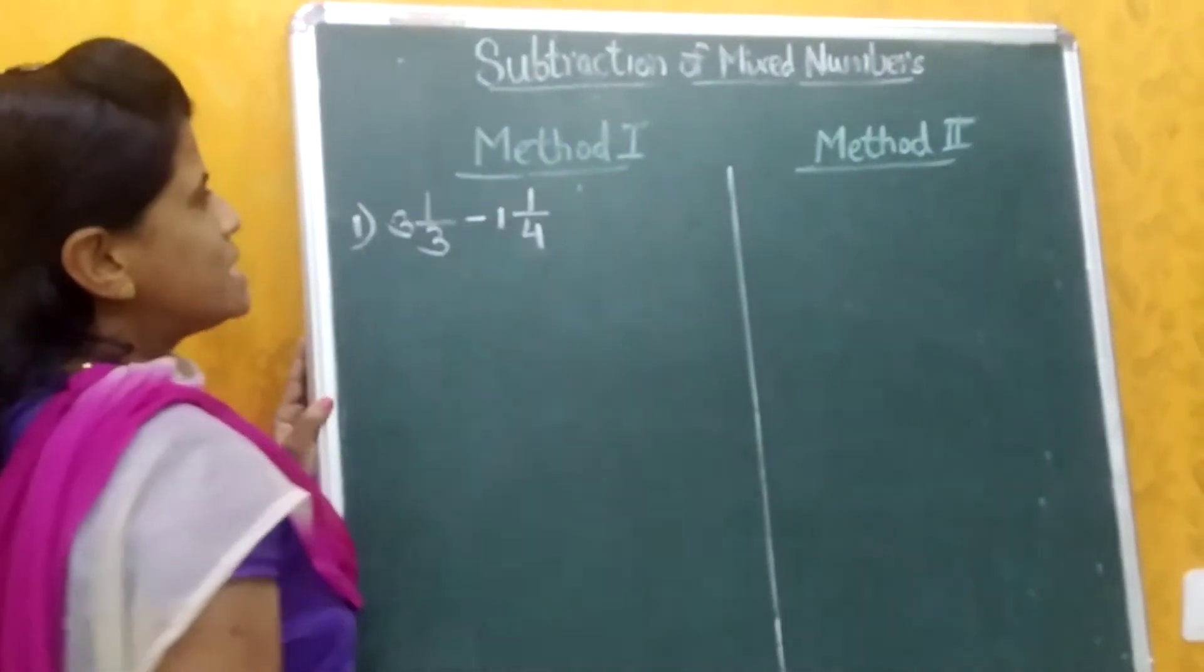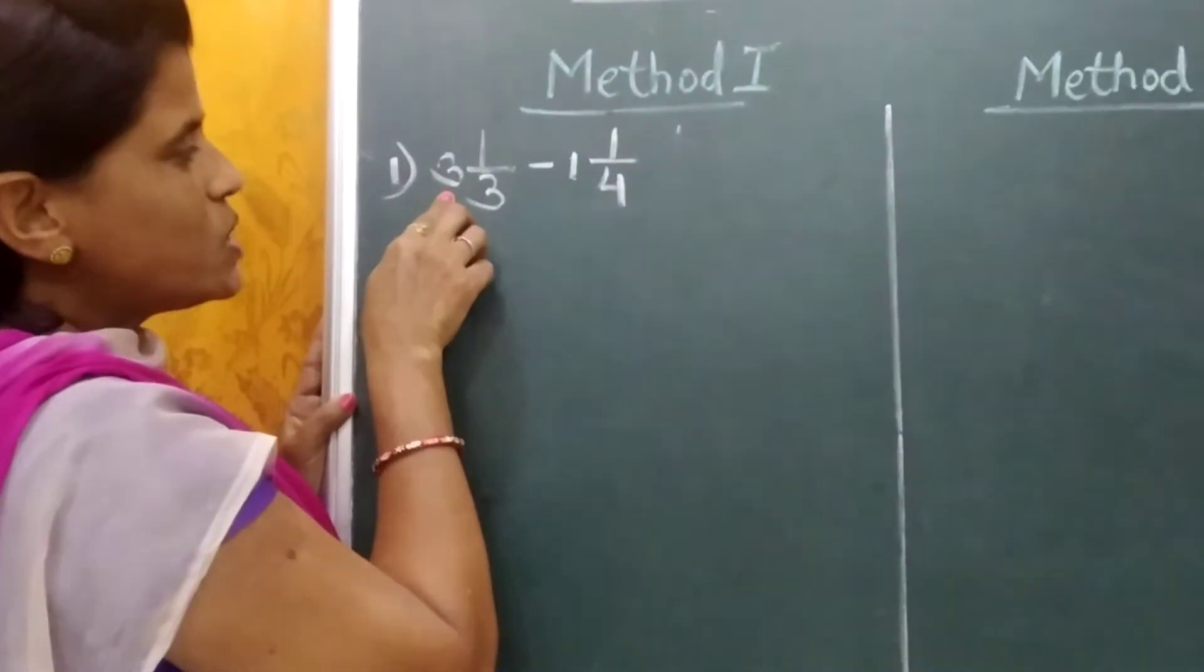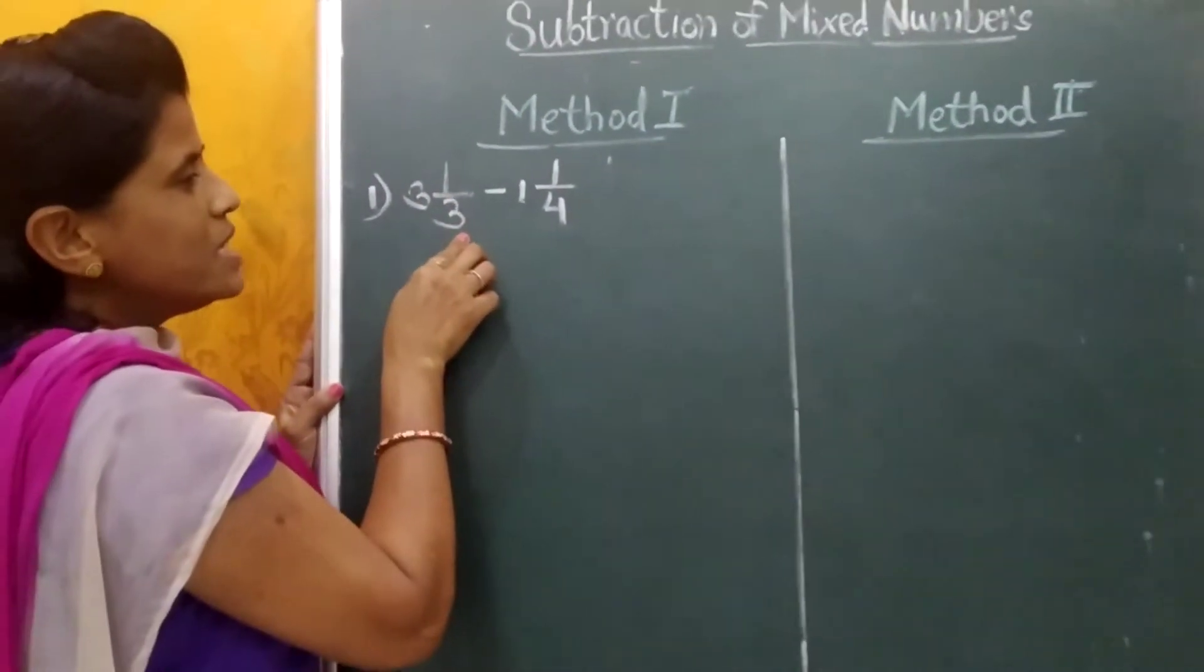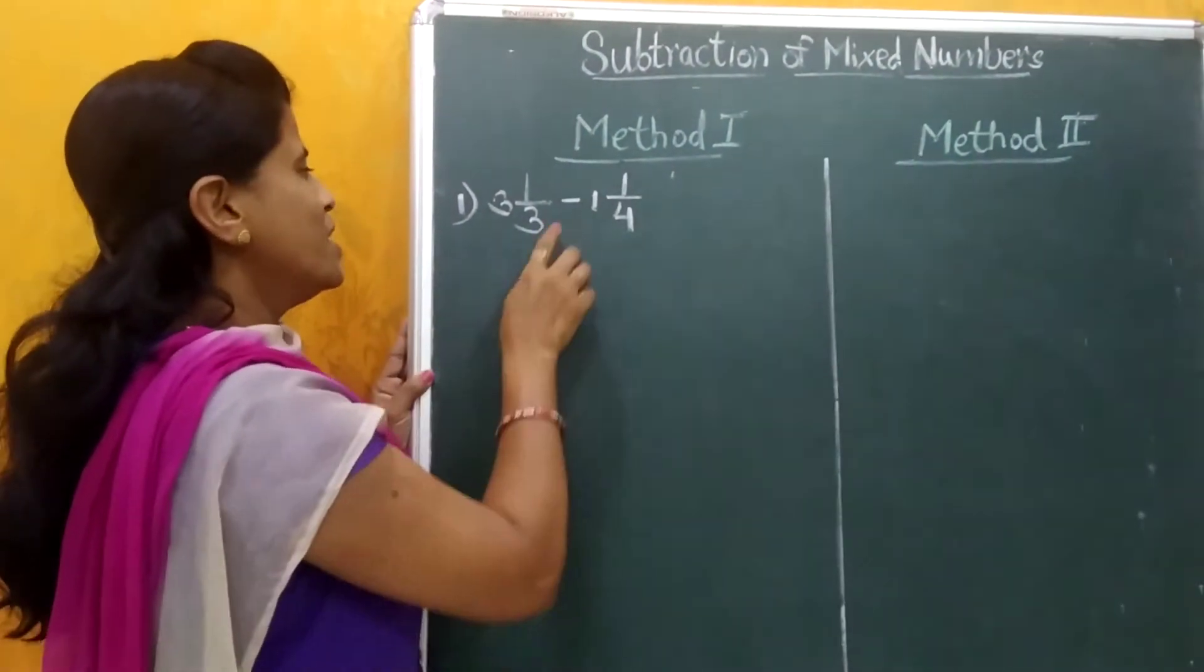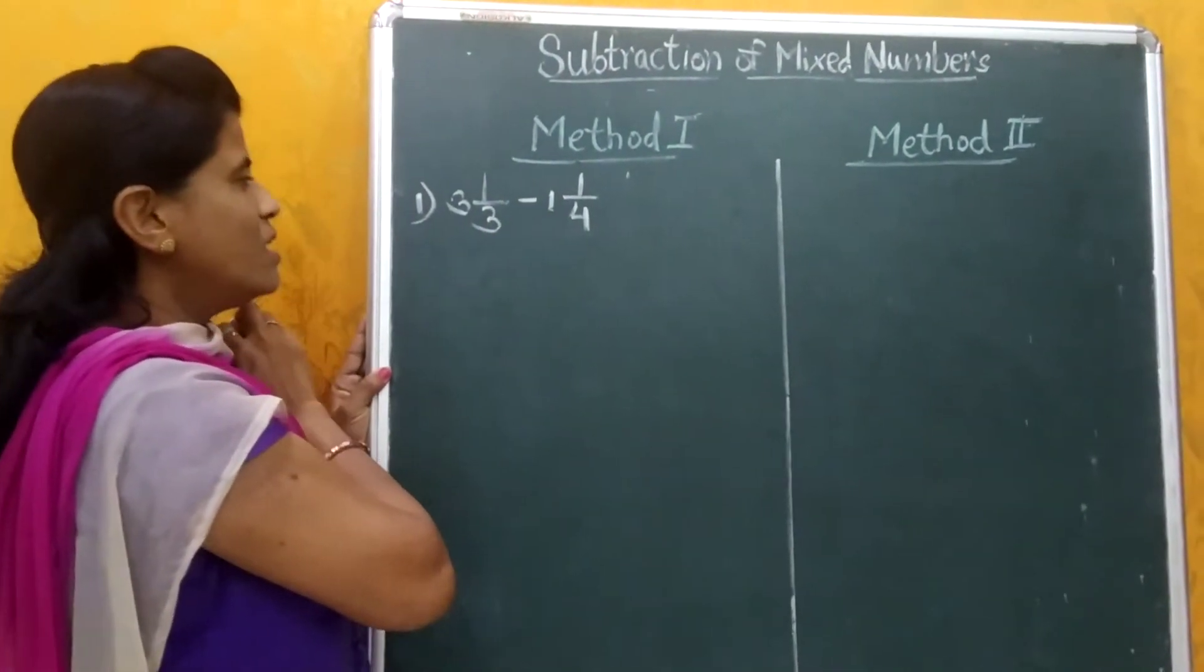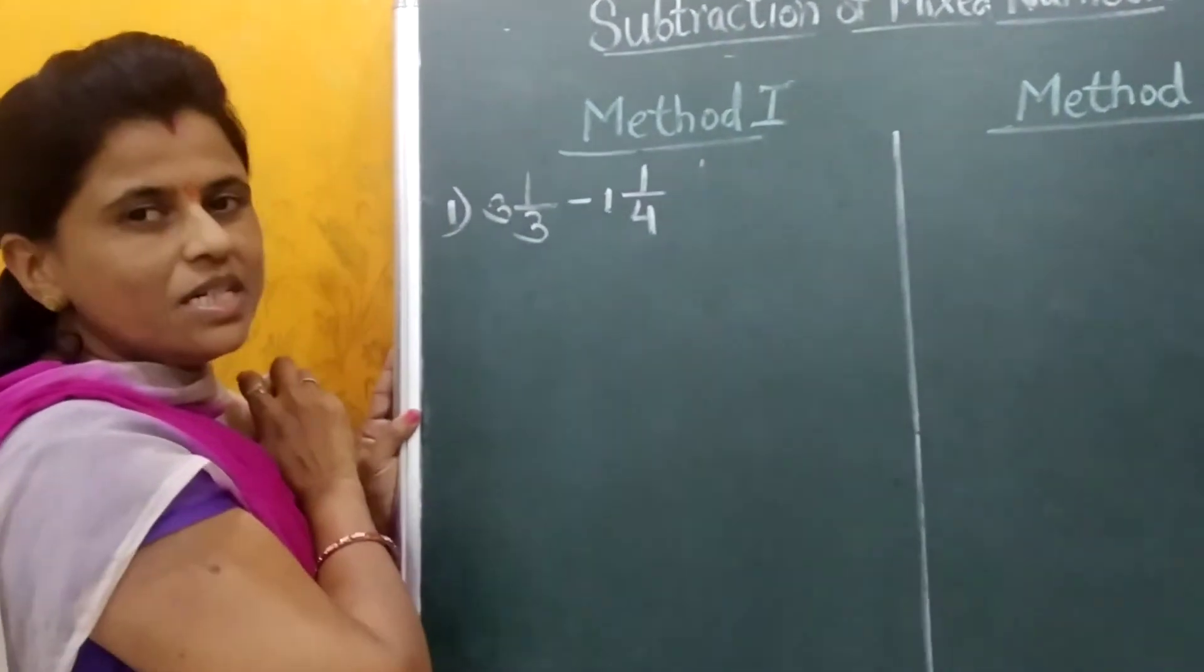So what is this mixed number? Mixed number is a number in which one is whole number and the other is proper fraction. Now what is proper fraction? A proper fraction is one in which the numerator is smaller than the denominator.